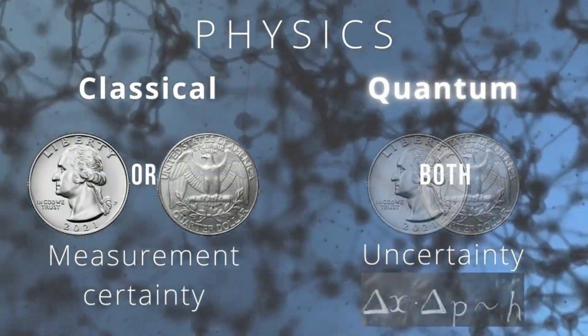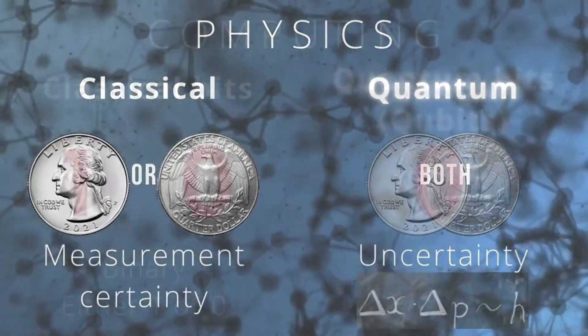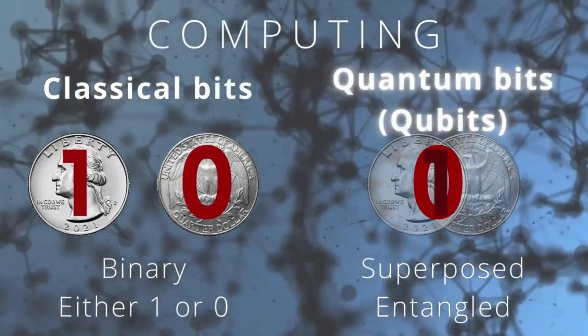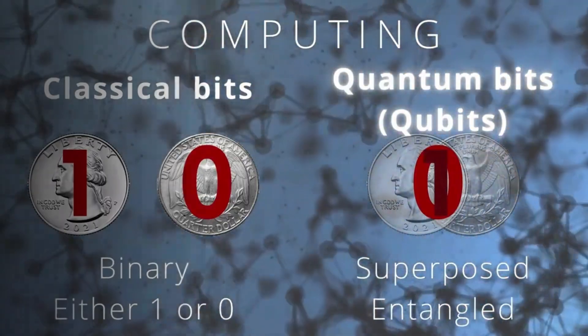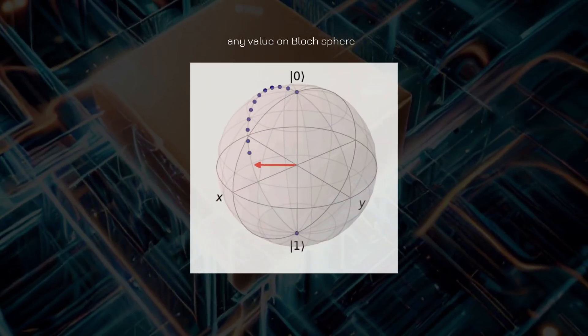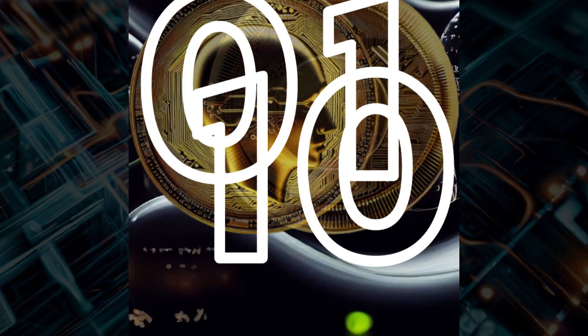In classical computing, information is represented using bits which can have only one of two values, zero or one. In quantum computing, information is represented using quantum bits or qubits, which can exist in superposition of both zero and one at the same time.